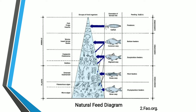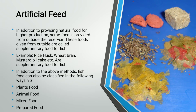Now we discuss artificial feed, which is prepared in modern feed mills to feed fish in the artificial culture medium. In relation to providing natural food for higher production, some food is provided from outside the reservoir; these foods given from outside are called supplementary food or artificial food. Examples include rice husk, wheat bran, mustard oil cake, etc.